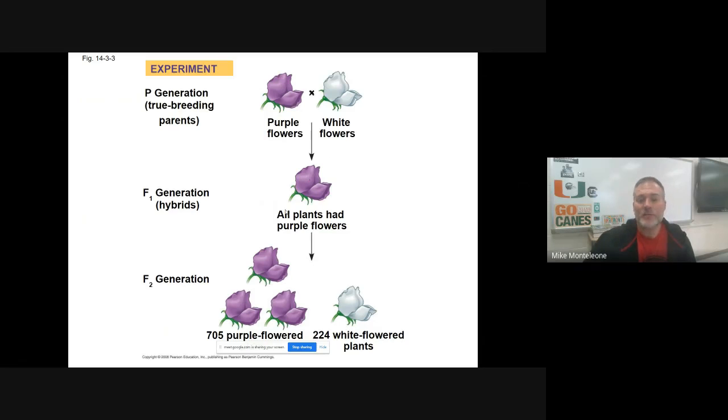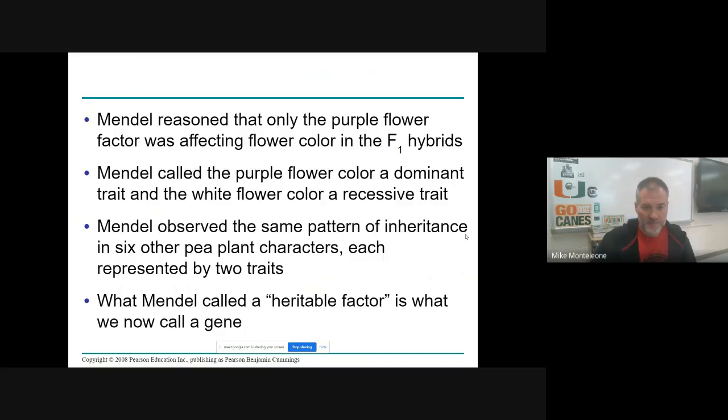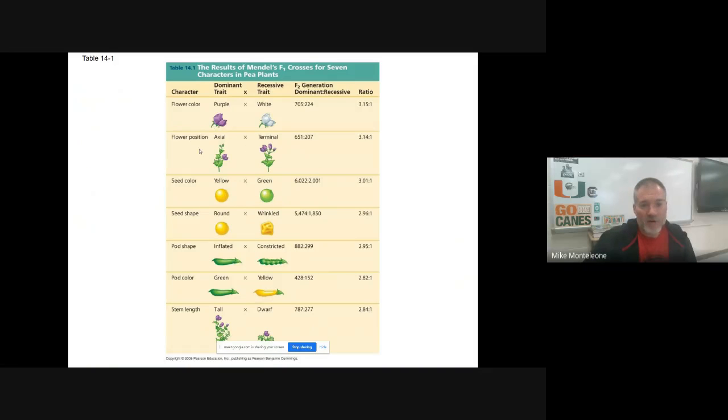Next thing he did was he self-pollinated one of the F1 baby plants to get his F2 generation. And when he did that, he noticed that the trait that disappeared in the F1 reappeared in the F2 about 25% of the time. So 75% were this original F1 color. 25% of the babies had the other trait that disappeared in the F1. And he found this pattern amongst all the traits that he looked at.